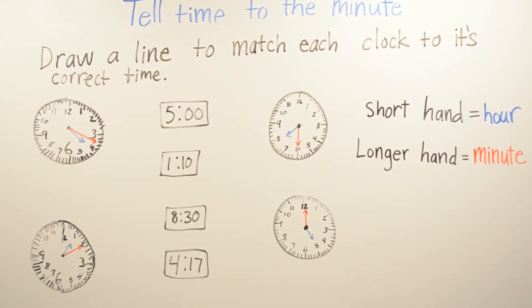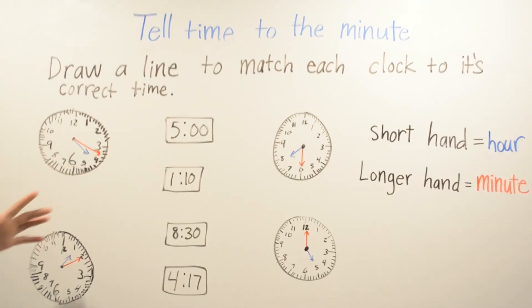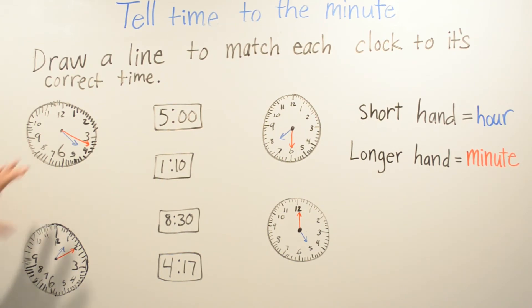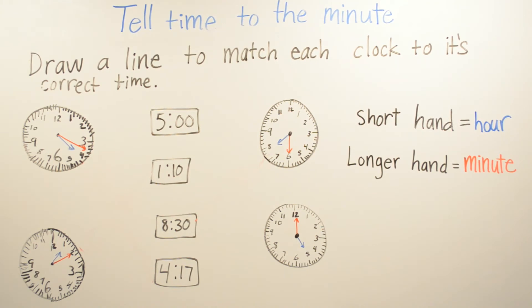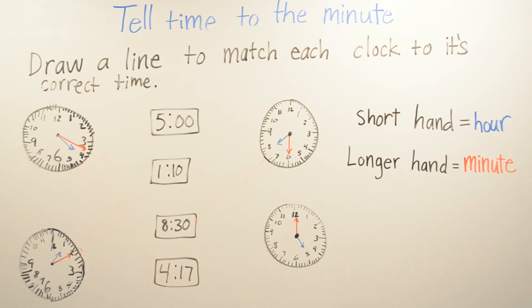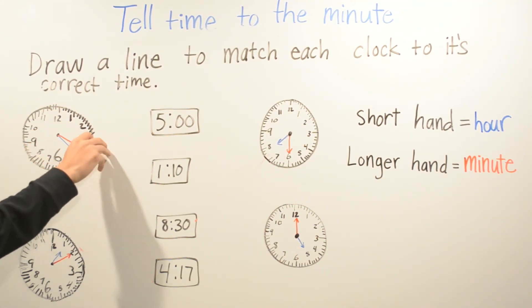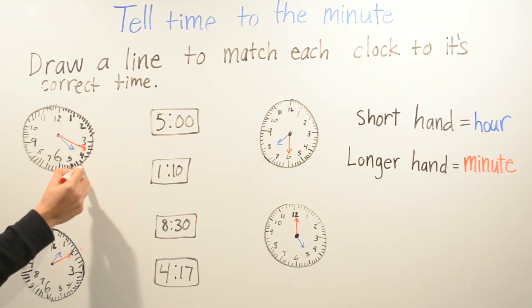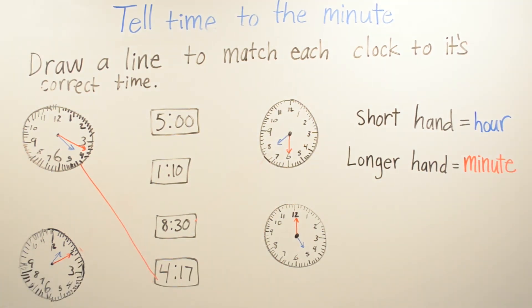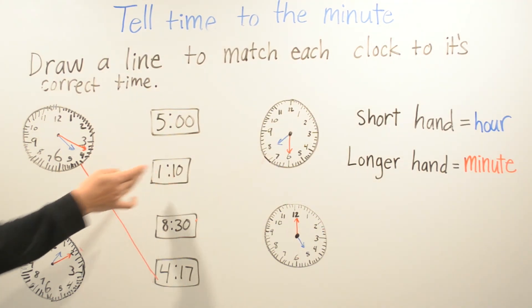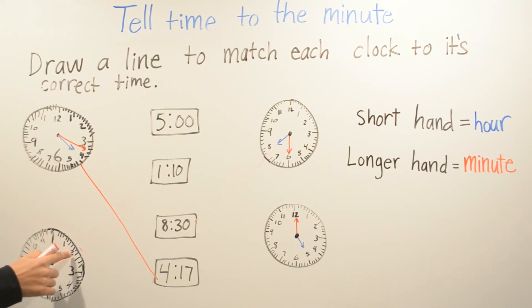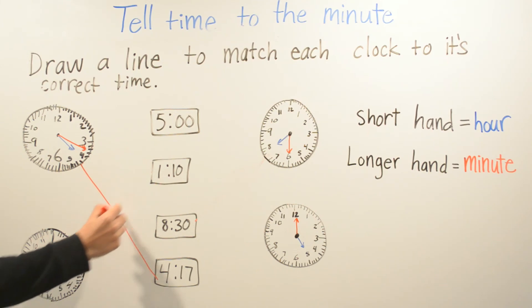For this example, we have to draw a line to match each clock to its correct time. We have 4 different clocks and we have to draw a line to the correct time. Starting with the first clock — our hour is 4. Counting the minutes: 1 is 5, 2 is 10, 3 is 15, and each little line is 1 minute, so 16, 17. This is the correct one for 4:17. For the next clock, the smaller hand is on the 1, so our hour is 1. Counting: 5, 10 — so the time is 1:10.